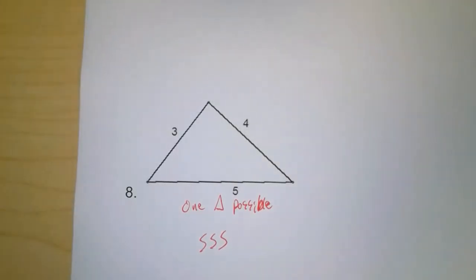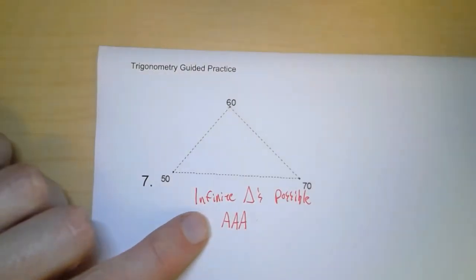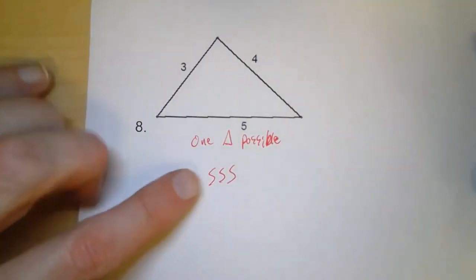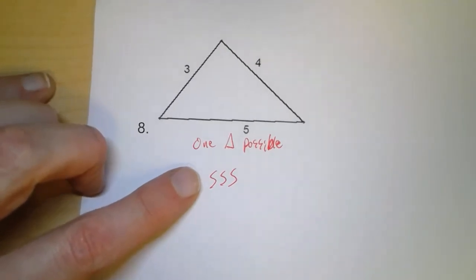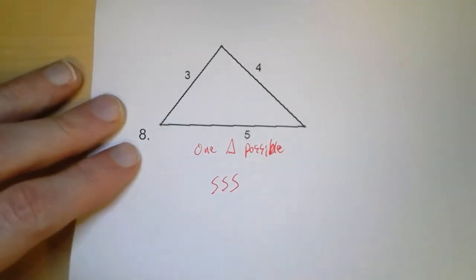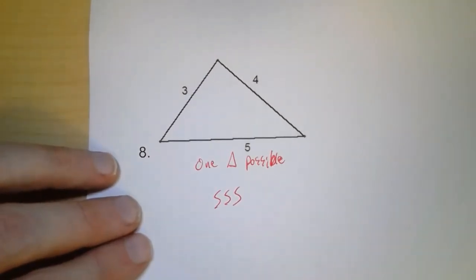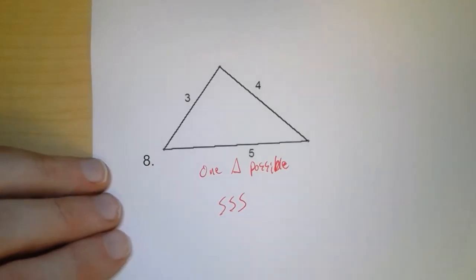So, going through this, all we really brought up is the idea that when you have side-side-angle, you could have zero, one, or two. If you have angle-angle-angle, you could have infinite possibilities. But if you have anything that was a congruency shortcut from geometry, then you're only going to have one possible triangle. That will be your solution. And we'll pick up this idea in the next video when we practice how many solutions there could be when we're given side-side-angle.